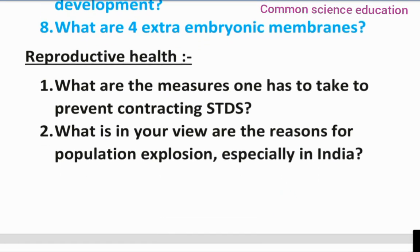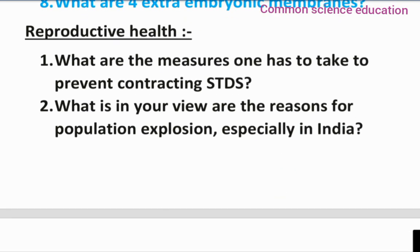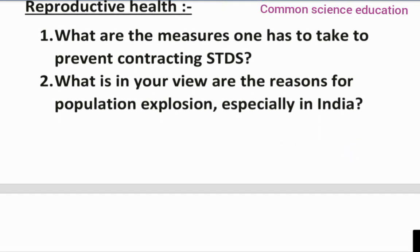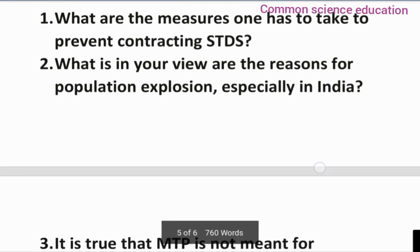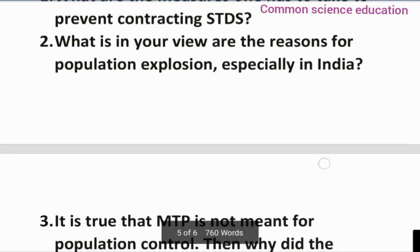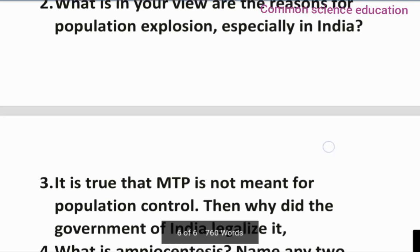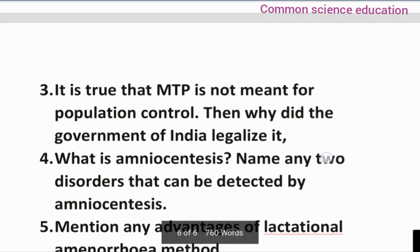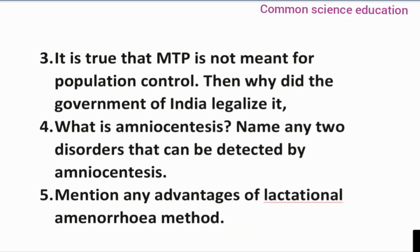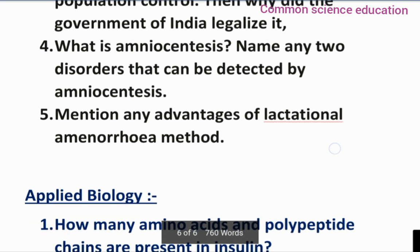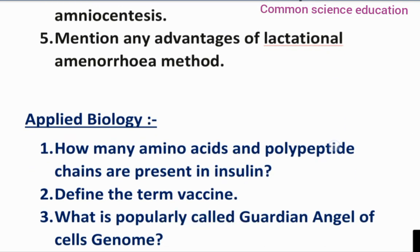Reproductive health important questions: What are the measures one has to take to prevent contracting STDs? What in your view are the reasons for population explosion, especially in India? Is it true that MTP is not meant for population control? Then why did the Government of India legalize it? What is amniocentesis? Name any two disorders detected by amniocentesis. Mention any two advantages of the lactational amenorrhoea method.